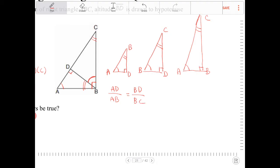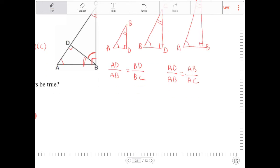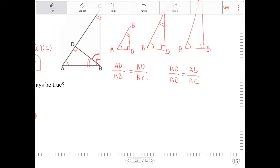I can also do the same thing with the larger triangle. I can also say AD over AB, which is the smaller triangle here, will be proportional to AB over AC. I can set up these proportions, and I can do the same thing with the longer leg to the hypotenuse.